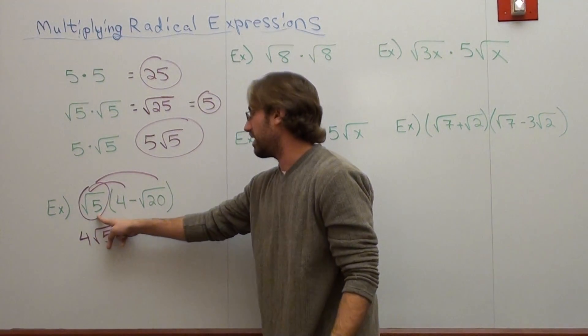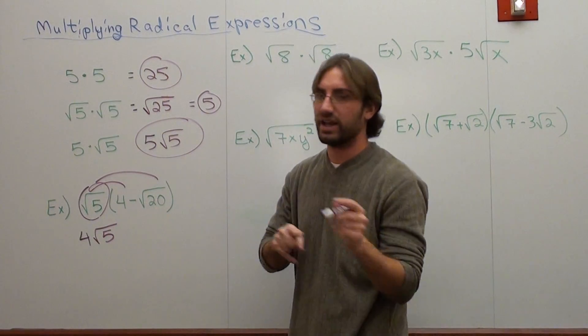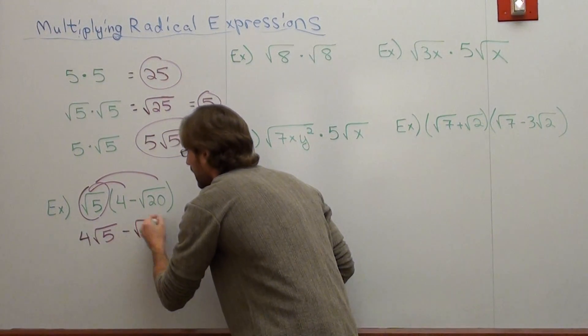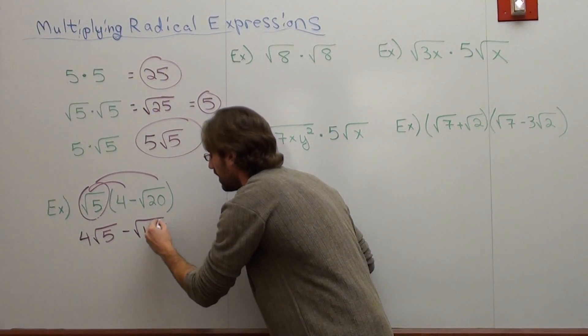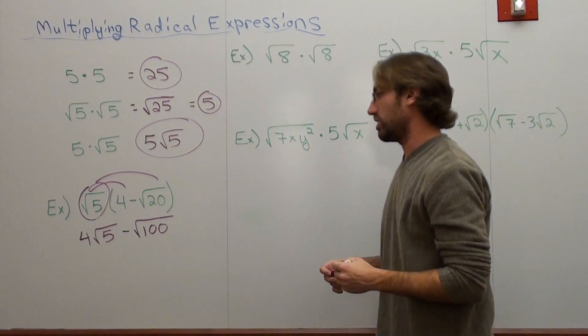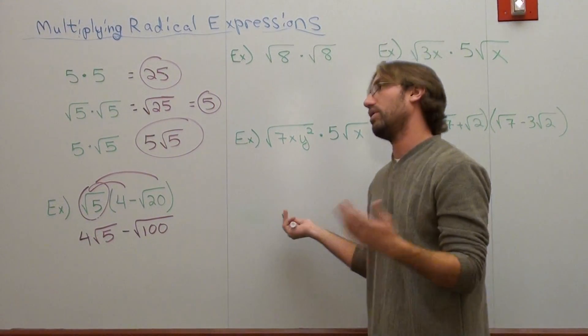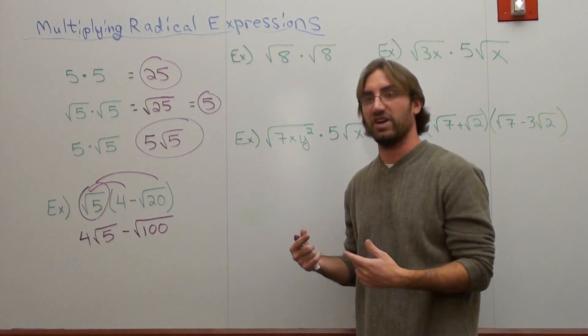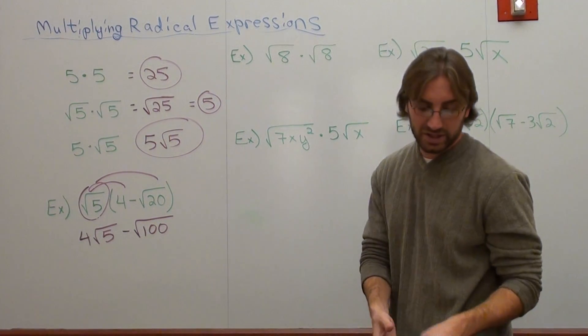And the square root 5 times negative square root 20 is negative, and 5 times 20 is square root 100. Now if you know that the square root of 100 is 10, perfect, then you're done. Some of you need to split it up.